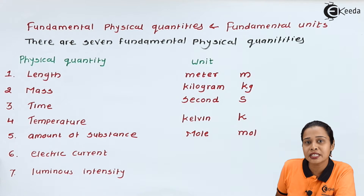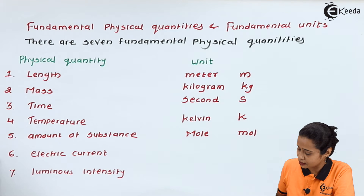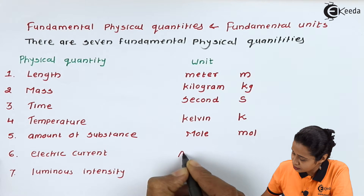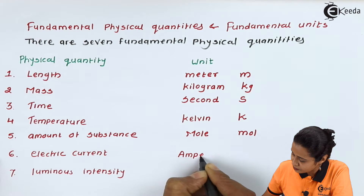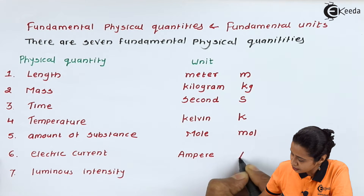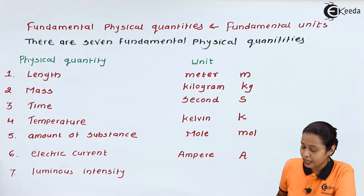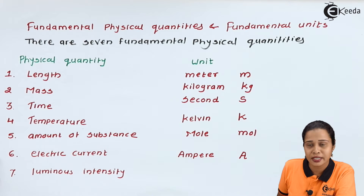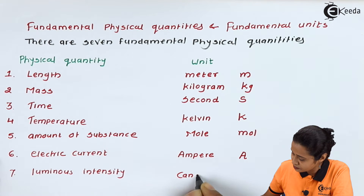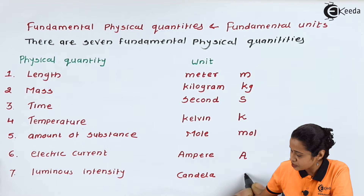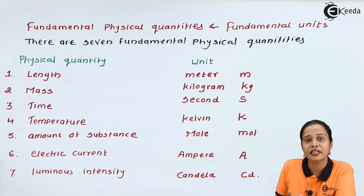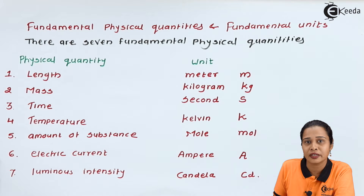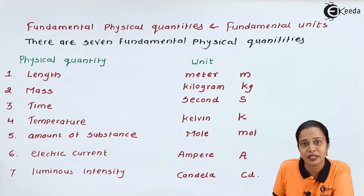Then we have the next physical quantity, electric current. The unit of electric current is ampere, which is denoted by capital A. And the last one is luminous intensity, whose unit is candela, denoted by Cd. So these are the seven basic or fundamental quantities. The measurement of these quantities does not depend on any other physical quantity.